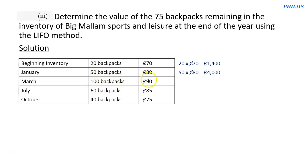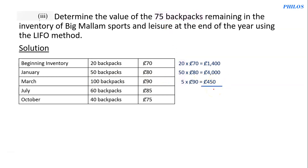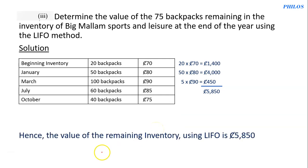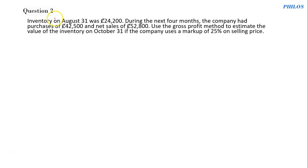We take 5 times 90, which gives 450. Then add everything together: 1,400 plus 4,000 plus 450 gives 5,850. We conclude that the value of the remaining inventory using the LIFO method is 5,850.